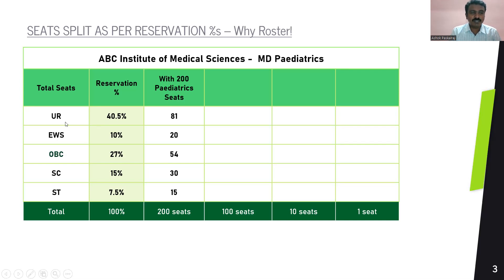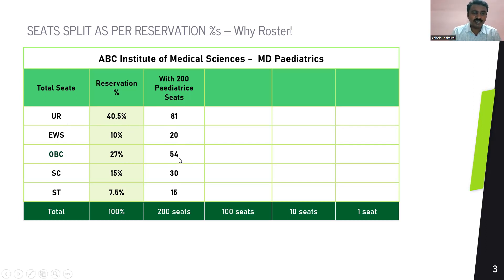If I have 200 pediatric seats, it is a simple process. UR has 40.5%, so I allot 81 seats under UR. Under EWS, I allot 20 seats because 10% of 200 seats is 20. Similarly, OBC gets 54, SC gets 30, and ST gets 15. So my seat matrix would show 81 seats under UR, 20 under EWS, 54 under OBC, 30 under SC, and 15 under ST if I have 200 pediatric seats.